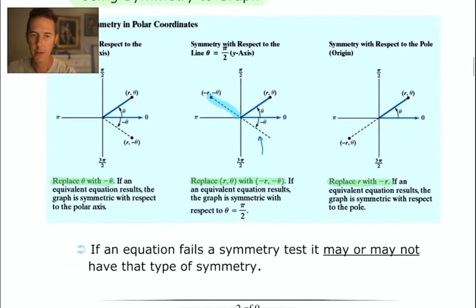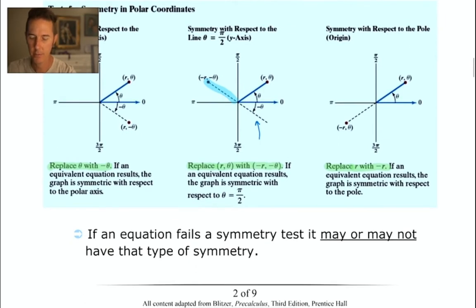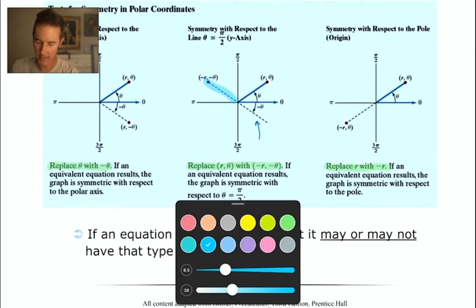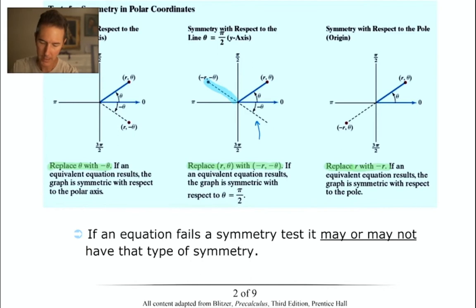Here's the kicker - if you haven't highlighted anything ever, highlight this: If the equation fails a particular symmetry test, that doesn't mean anything. The graph could still exhibit that kind of symmetry. If you fail one of these three tests, you haven't really learned anything. It's only a sure thing if you pass the test.